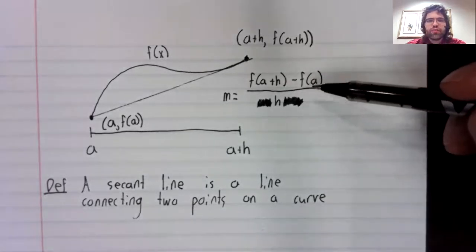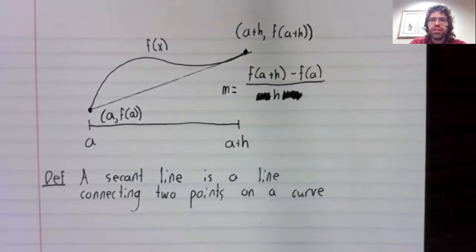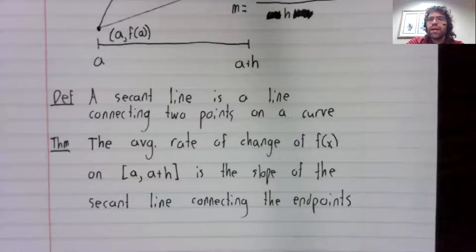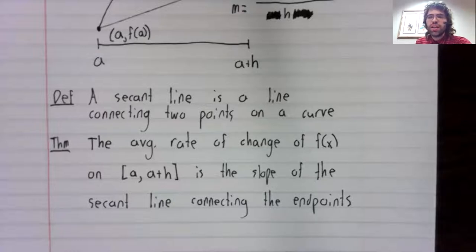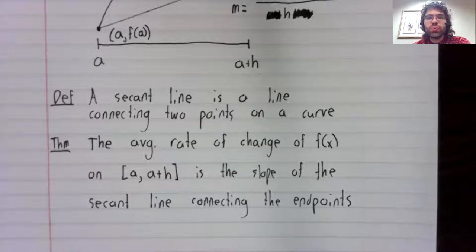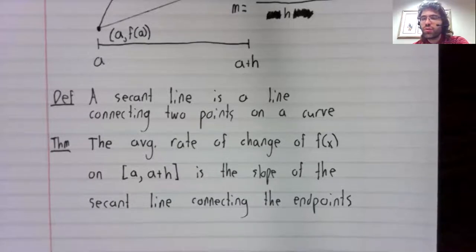And this is the average rate of change formula. So the average rate of change on an interval is the slope of the secant line connecting the first and the last point on the interval.